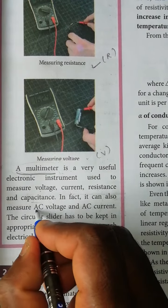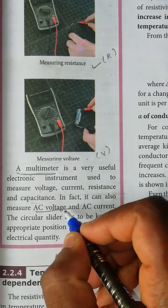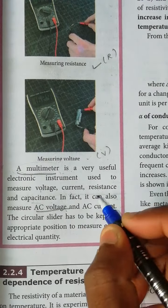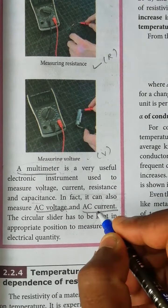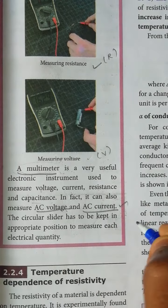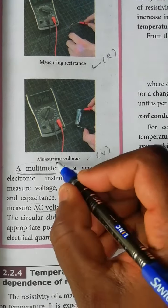it can also measure AC voltage—alternating current voltage, AC circuit—AC current and how to measure using this multimeter.